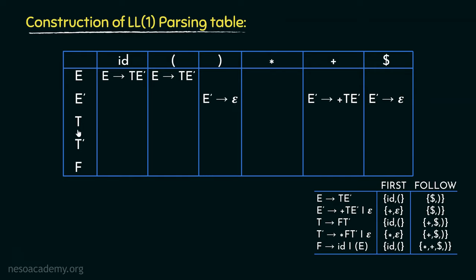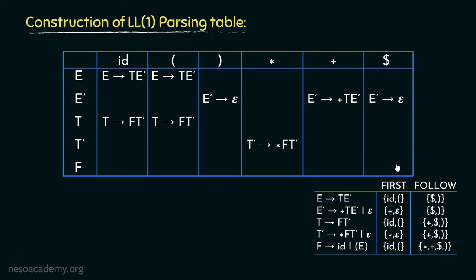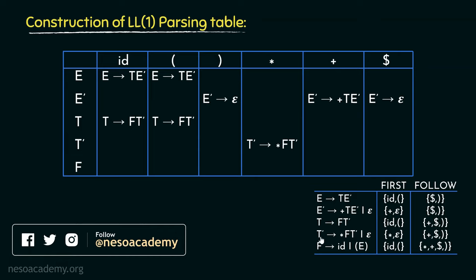Moving to non-terminal T: in the first of T we have ID and open parenthesis, and T is involved in only one production rule. Following the same drill, we place that production rule in the columns of ID and open parenthesis. For T-dash: its first contains the terminal symbol star, so the production rule T-dash → star F T-dash is placed in the column of star. Like E-dash, T-dash also has an epsilon production, so we fill the columns of plus, dollar, and close parenthesis for T-dash with the production rule T-dash → epsilon, since those are the terminal symbols T-dash will follow when it produces epsilon.